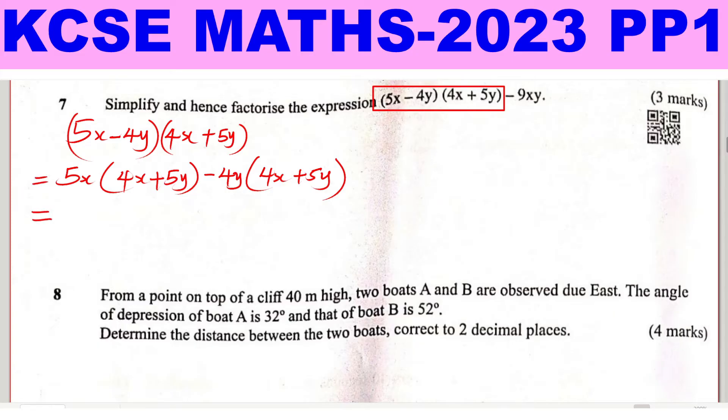5x times 4x, this will give 20x squared, plus 5x times 5y gives 25xy, minus 4y times 4x gives negative 16xy, then 4y times 5y, this will give negative 20y squared.